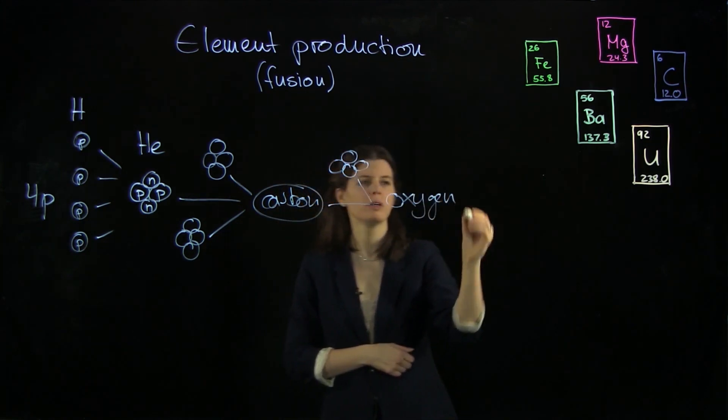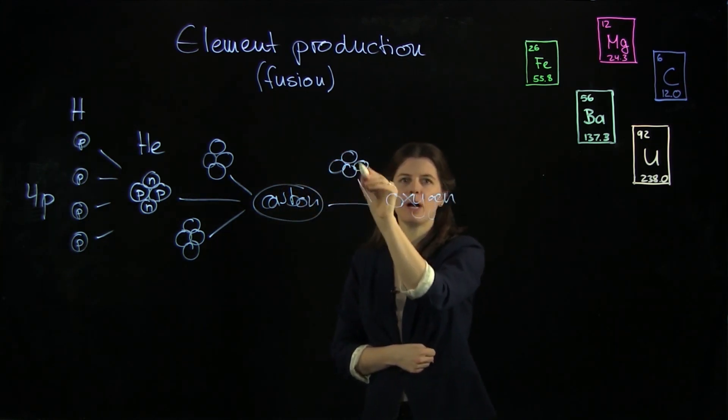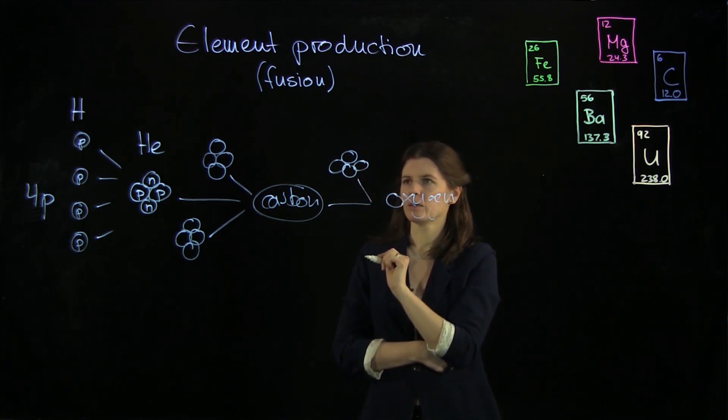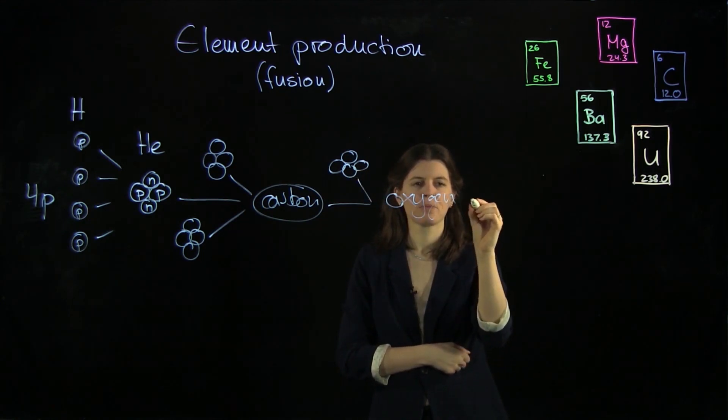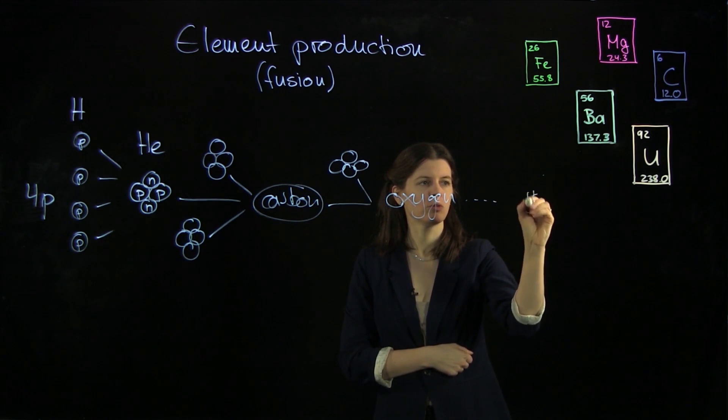And if we add more so-called alpha particles, helium nuclei, often called alpha particles, then eventually we're going to get to iron.